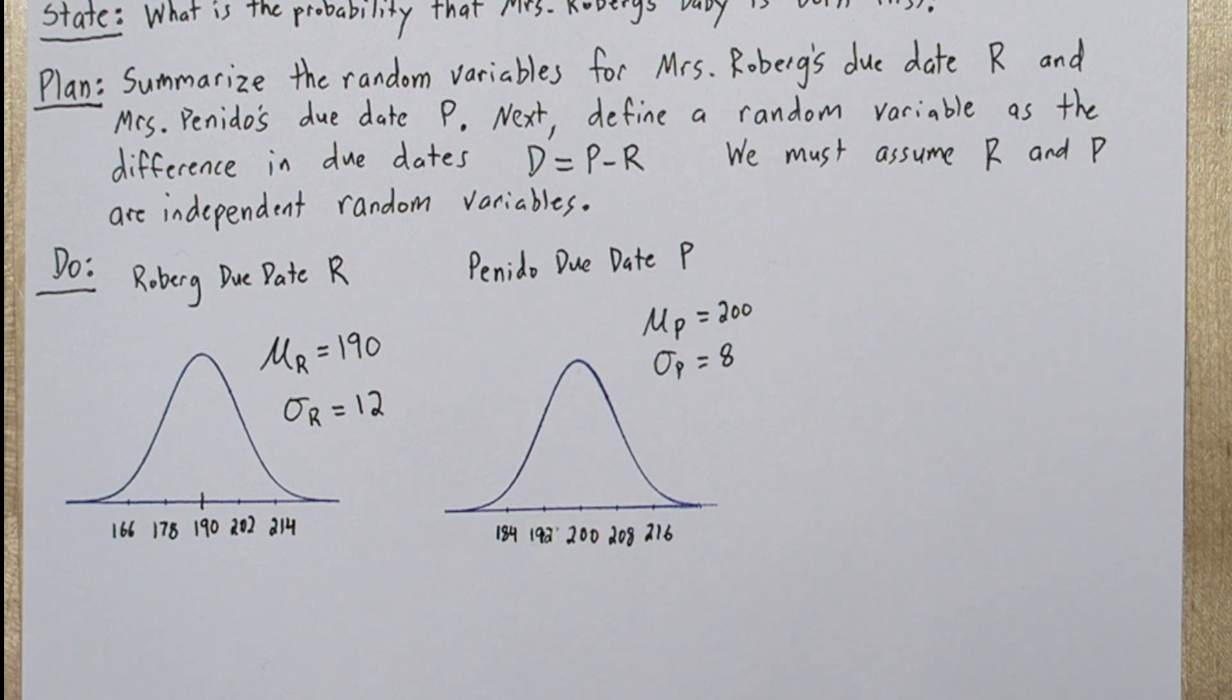But if the Roeberg baby is a little late, say at 202 days, one standard deviation above the mean, and the Paneto baby is on time at 200 days, the Paneto baby would be born first.